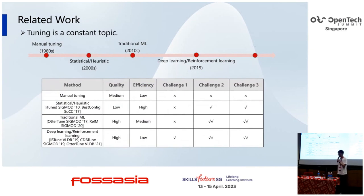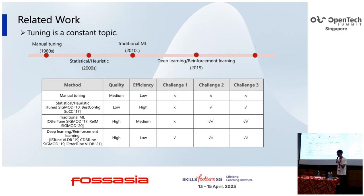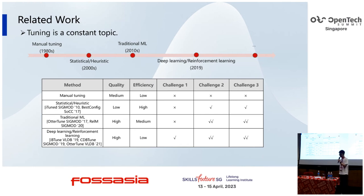Now let's look at the related work. Tuning is a constant topic. In the 1980s, manual tuning was used. In the 2000s, statistical and heuristic methods were widely used. Recently, deep learning and reinforcement learning methods are widely used. The following table shows the performance of all these methods under several dimensions, such as quality, efficiency, and ability to deal with the three challenges.